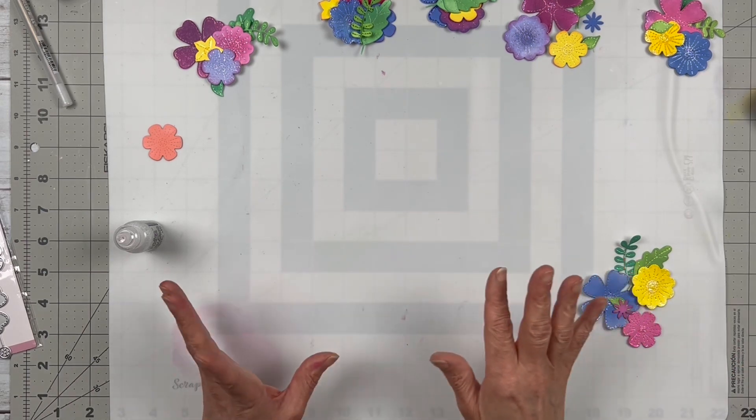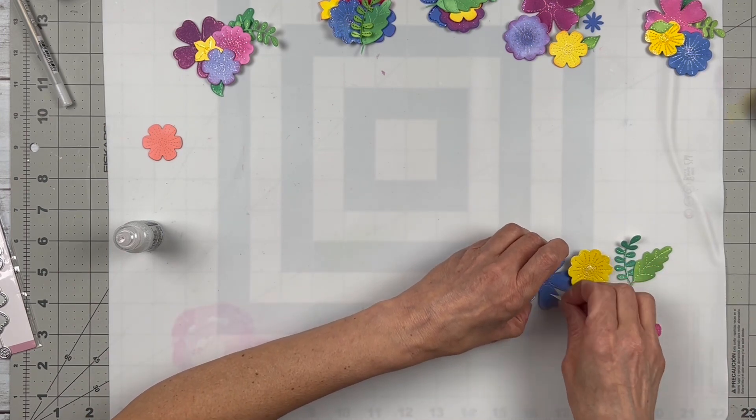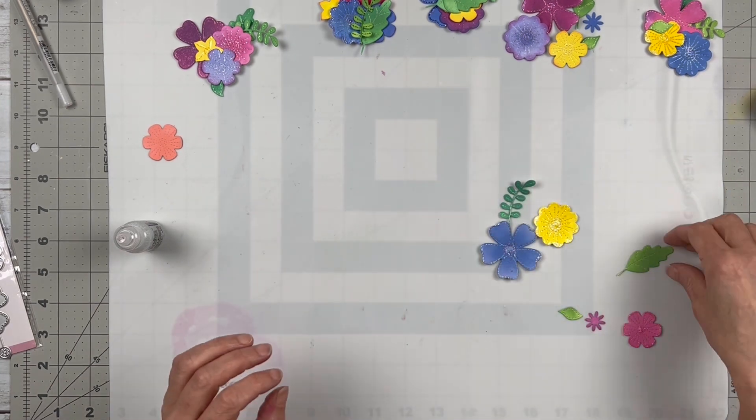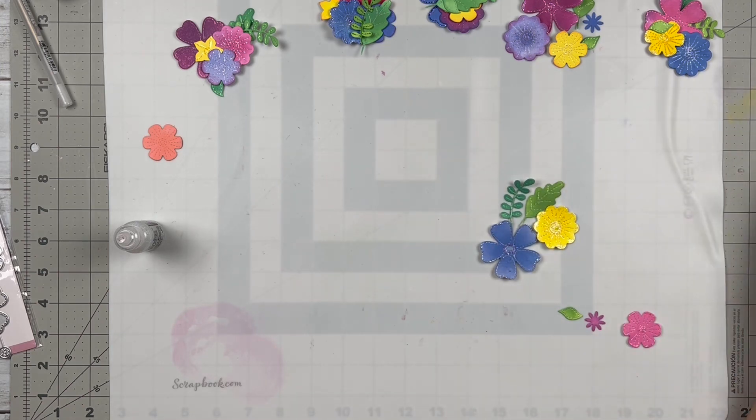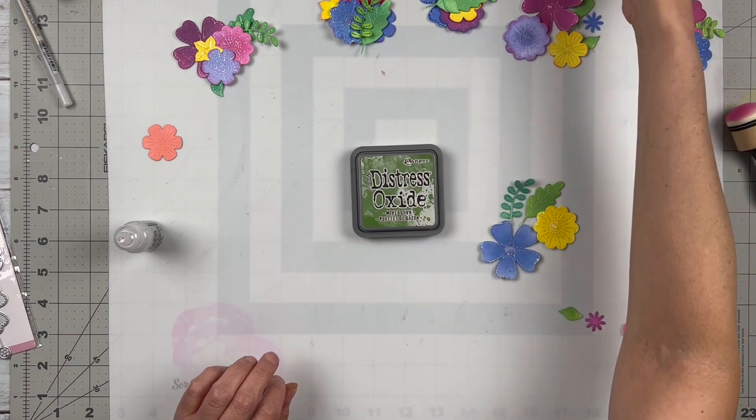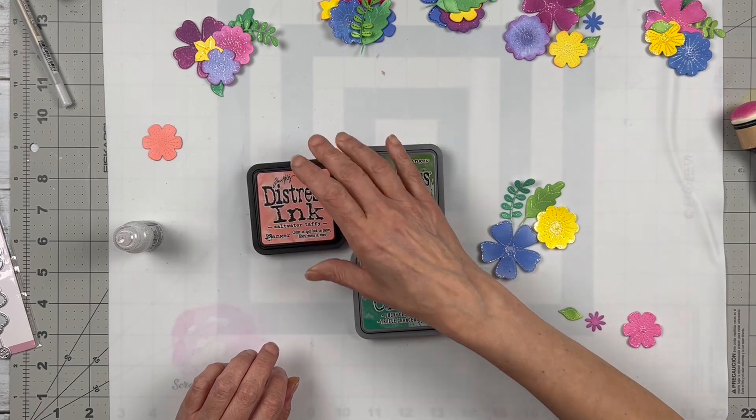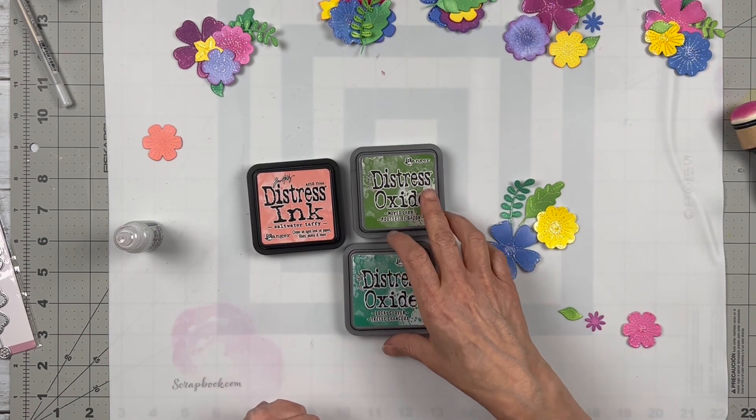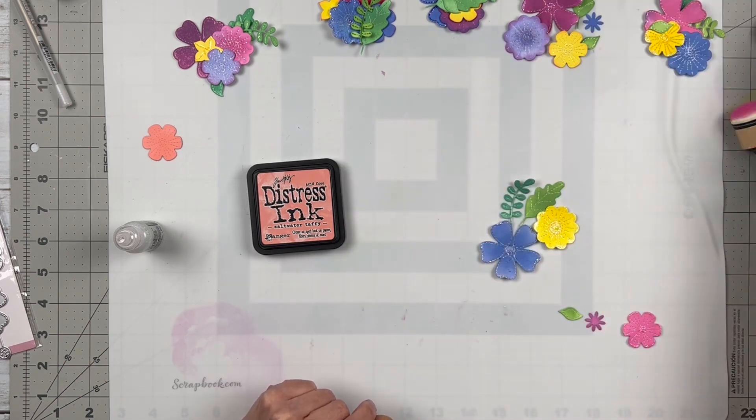The first thing was I cut all of them out on white cardstock so that I could color them myself. To color them I just used my Distress Oxide inks and Distress inks. I love these and it's so much fun to create your own color palette.